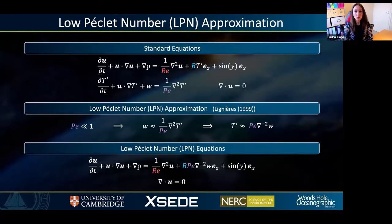In this talk, we're going to be considering the limits of small Prandtl number. To assist us with our analysis, we're going to make use of a convenient approximation that was originally considered by Lignieres in 1999, and this is called the low Péclet number approximation. In the asymptotic limit of small Péclet number, the temperature equation reduces to a dominant balance between the vertical velocity field w and the temperature perturbations t'. This means that the vertical velocity field is slaved to the temperature perturbations.